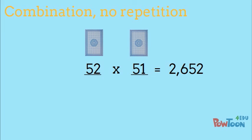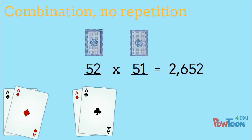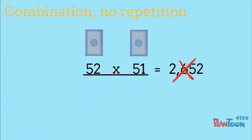However, this would count getting an ace of clubs, then an ace of diamonds, as a different hand than getting an ace of diamonds, then an ace of clubs. They're the same pair of cards. So we need to divide our answer by the two ways that our two objects could be ordered. So we don't double count the same hand.